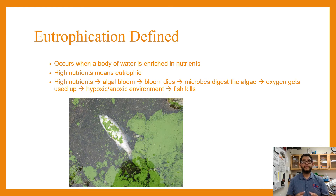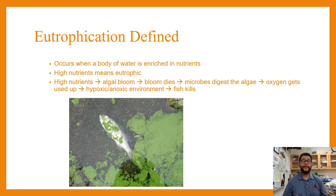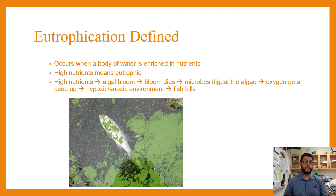This leads to — make sure you know these two words — either a hypoxic or an anoxic environment. Hypoxic means low oxygen, and anoxic means without any oxygen at all. This leads to a fish kill. That's why a fish like the one shown is not doing so well, because eutrophication has occurred.